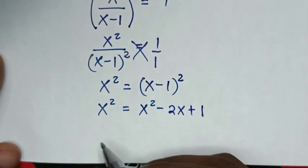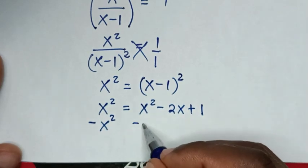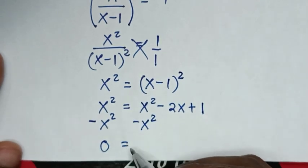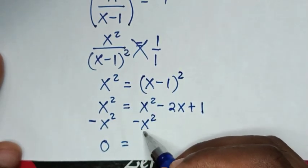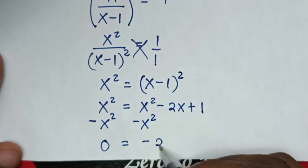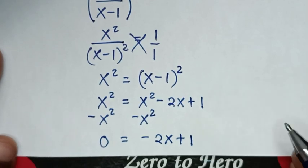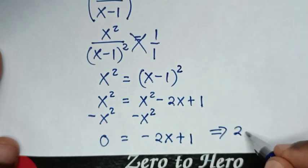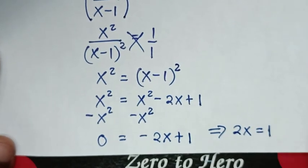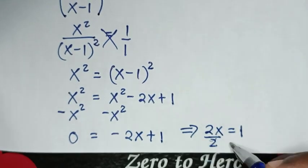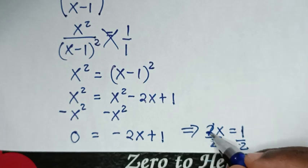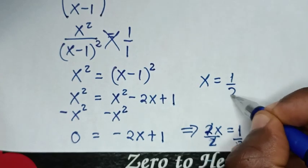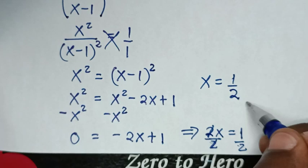From here, x squared is on both sides, so we subtract x squared from both sides — they cancel, leaving 0 equal to negative 2x plus 1. Taking negative 2x to the left side gives 2x equal to 1. Dividing both sides by 2, we get x equal to one half.